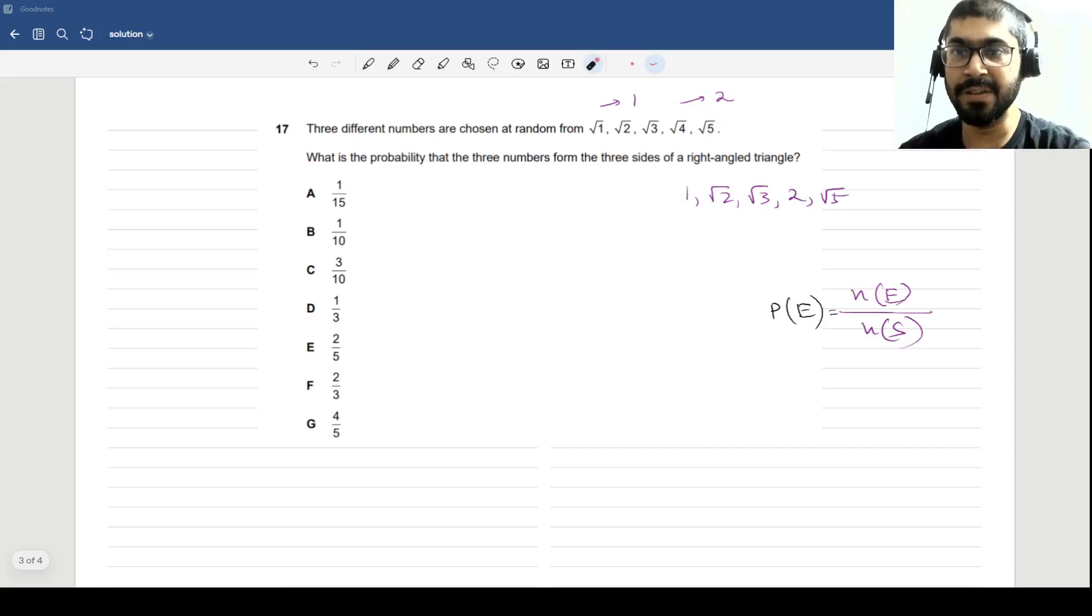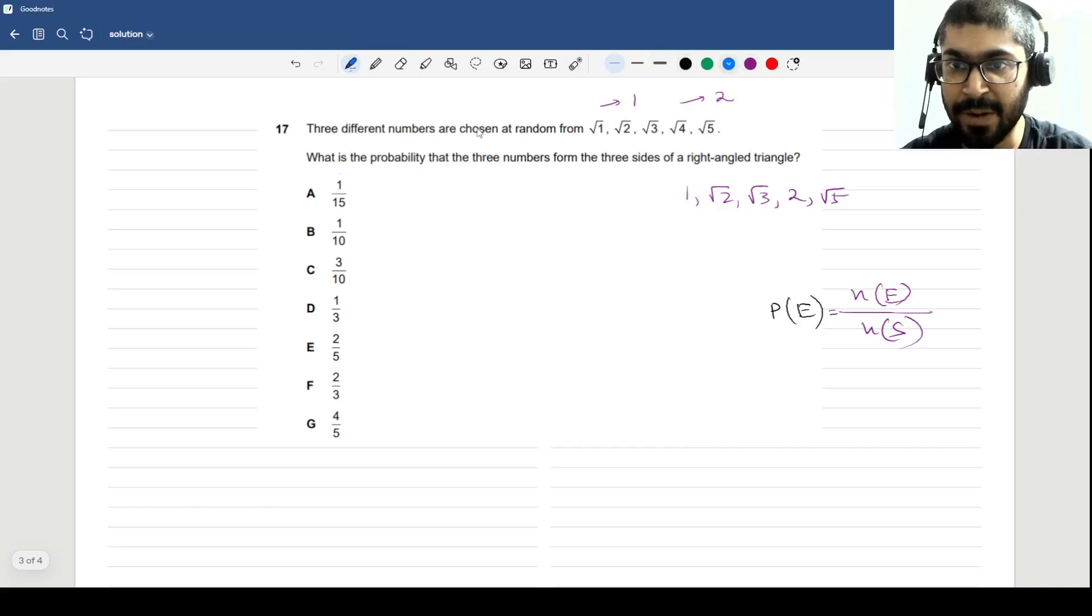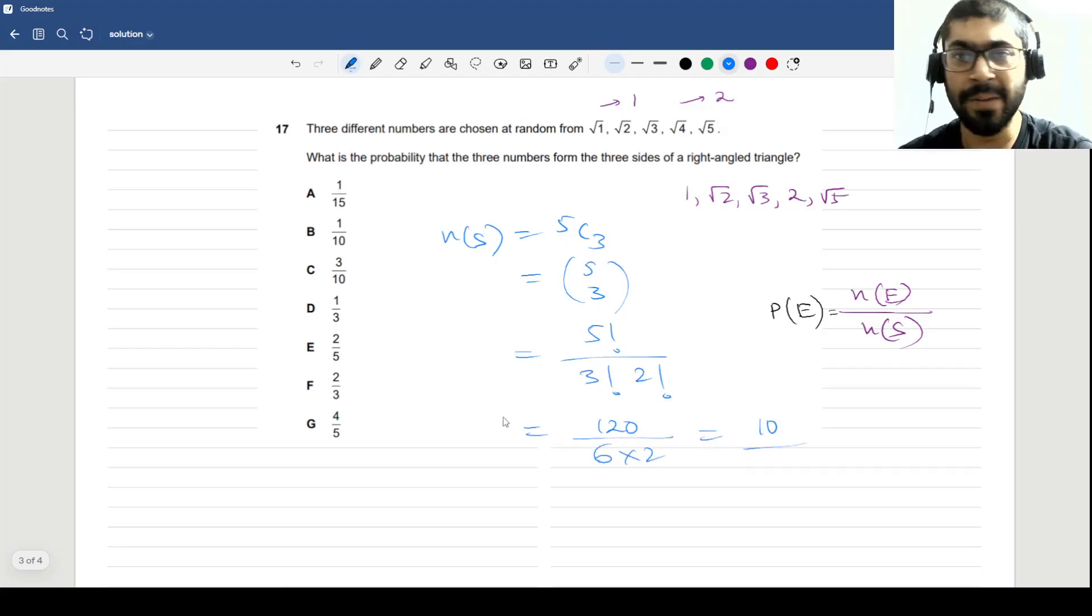Figuring out the numerator will require a few more steps using Pythagorean theorem, but the denominator we can figure out easily. It's basically the number of ways in which we can choose three numbers from this set of five, so n(S) will be 5C3. This number is 5!/(3!×2!) = 120/(6×2) = 10. So denominator is 10, which immediately eliminates options A, F, and D because 3 is not a factor of 10.